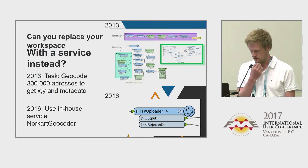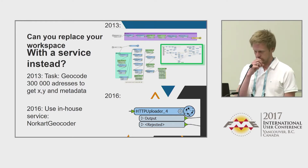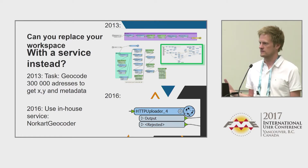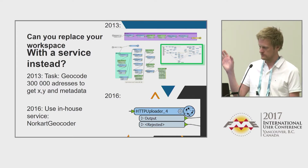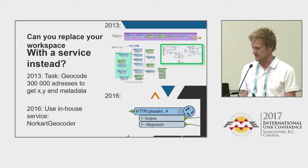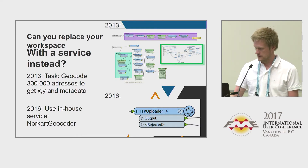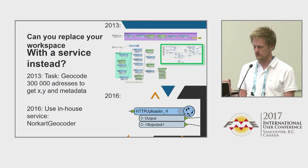One of my first tasks in 2013 was to geocode 300,000 addresses in Norway. I did a lot of database queries, some cleaning, et cetera. You have to think: is the workspace I created two years ago — do we now have a service for it? Because then you can just throw it away and use a REST service instead. These services are more optimized towards that one specific functionality, and you can also use them in other services.